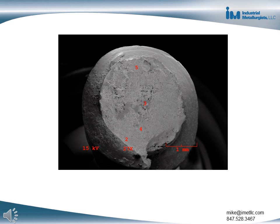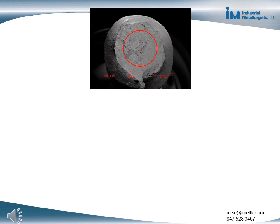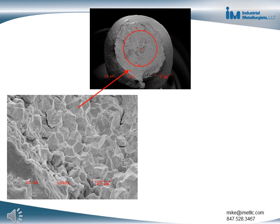This is a low magnification scanning electron microscope image of the fracture surface. Two different types of fracture features were seen. Along the outer portion of the fracture surface, there was intergranular cracking, which means the crack grew along the grain boundaries — which is not desired.